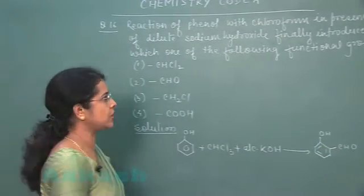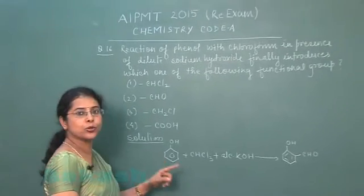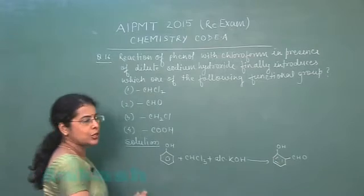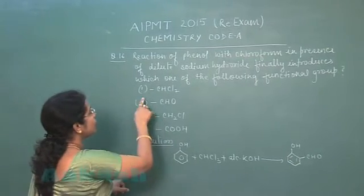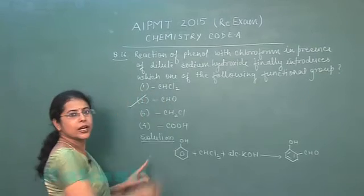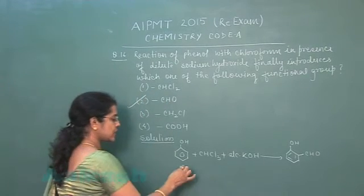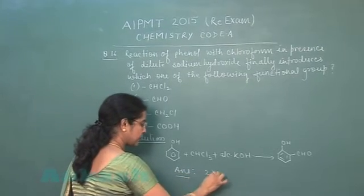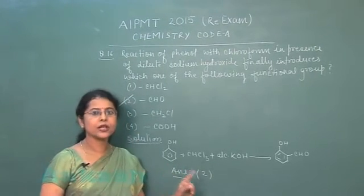So the functional group introduced in this structure is CHO. Now let us see the options. First option CHCl2, second option CHO. It means the correct answer is the second one. So second option is the correct answer.